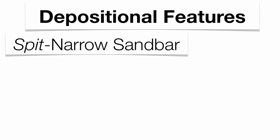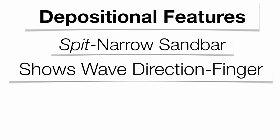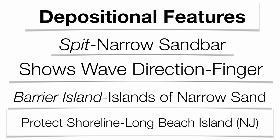There are some depositional features we need to talk about. One is what we call a spit — that's going to be a narrow sandbar that almost acts like a finger, and it shows the wave direction. There are also barrier islands, which are narrow bands of sand that can extend for hundreds of miles along a coastline — essentially a very narrow island chain. A good example might be Long Beach Island in New Jersey, and these are actually big enough to protect the shoreline.